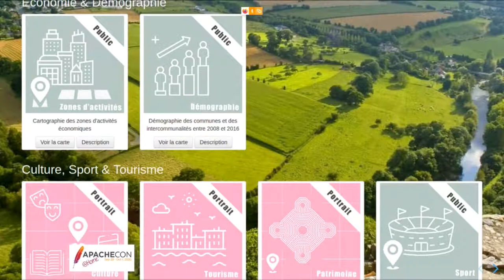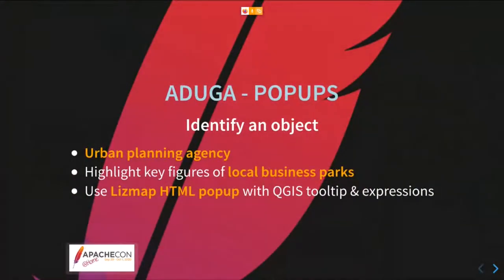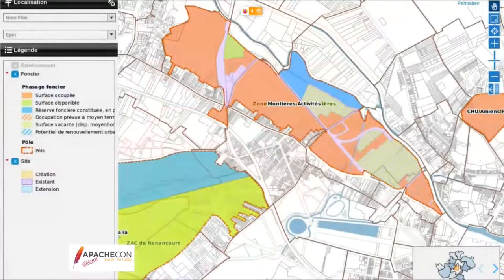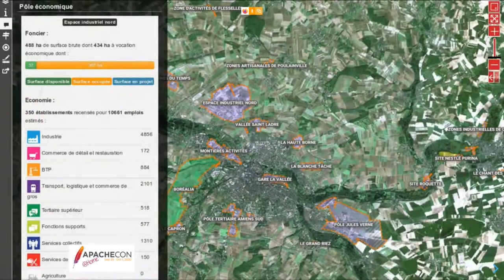They took a photo of a landscape and put it in the background, then chose some images to describe the maps. Another feature is pop-ups — the information you can get when you click on the map. Here, the example is done by an urban planning agency. They use HTML pop-ups with QGIS tooltips and expressions. Here is the map, and when you click on elements, you get this type of pop-up with HTML, based on expressions with aggregated data and information about the surface.